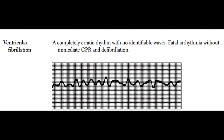A more serious heart rhythm is ventricular fibrillation. V-fib generally occurs after myocardial infarctions and is a completely erratic rhythm with no identifiable ventricular QRS complexes. These patients require CPR, including chest compressions, and immediate electrical defibrillation.